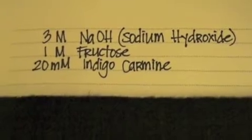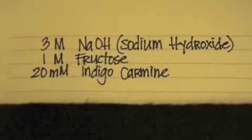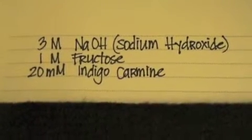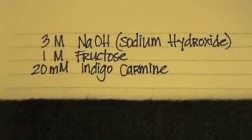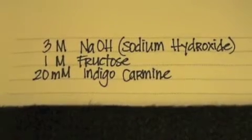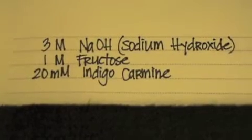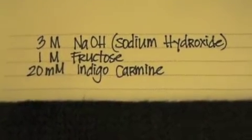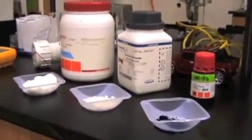Now we're going to go ahead and make our solution that's going to go within our biofuel cell. And this is our basic recipe, so you call it: we're going to take three molar sodium hydroxide and one molar fructose and 20 millimolar indigo carmine or your blue food color. We're going to mix these all together and this will become our solution.